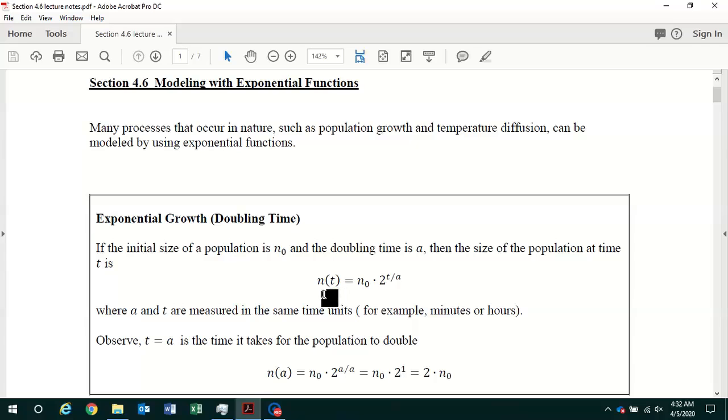The size of the population at time t is equal to the initial size n sub zero times 2 raised to the t over a power. This is t divided by a, and a and t have to have the same units. We can show that a indeed is the time for the population to double.